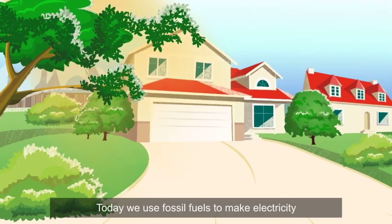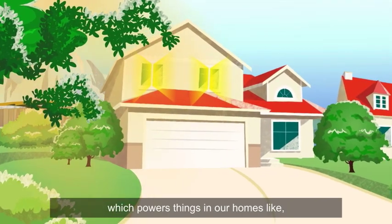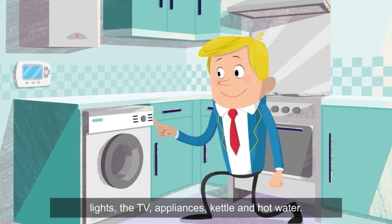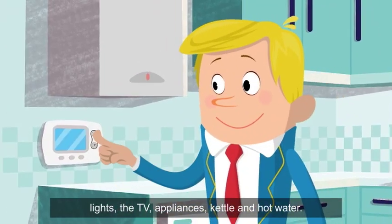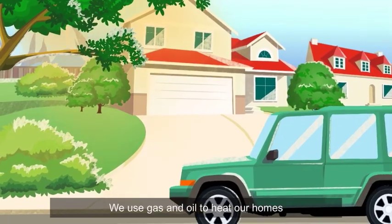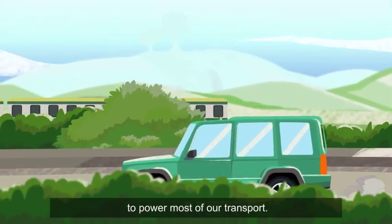Today, we use fossil fuels to make electricity, which powers things in our homes like lights, the TV, appliances, the kettle and hot water. We use gas and oil to heat our homes, while petrol and diesel are used to power most of our transport.